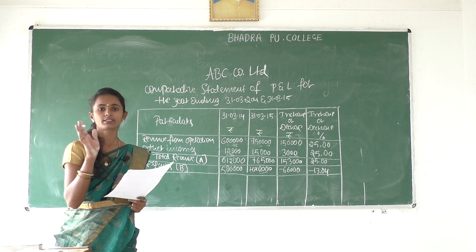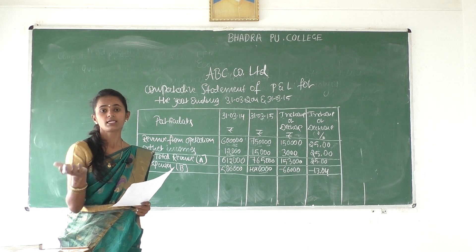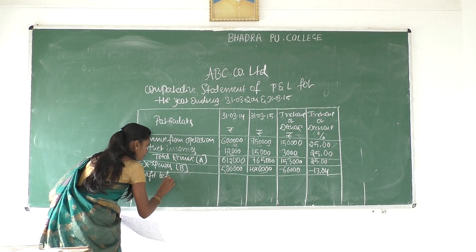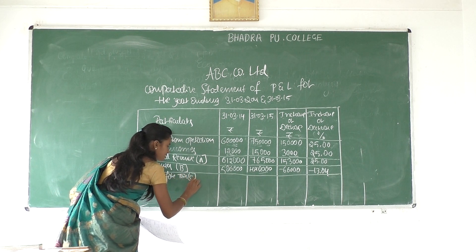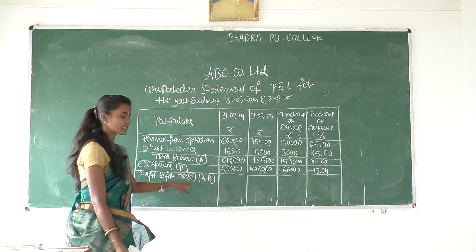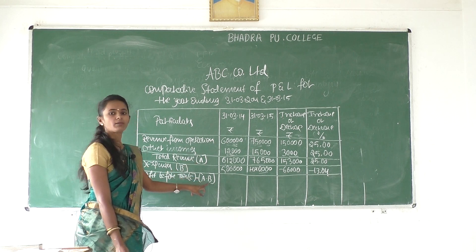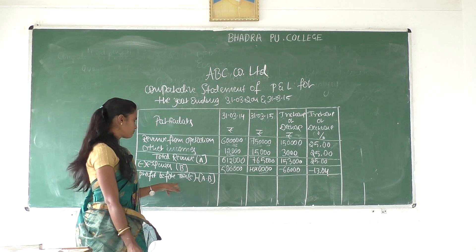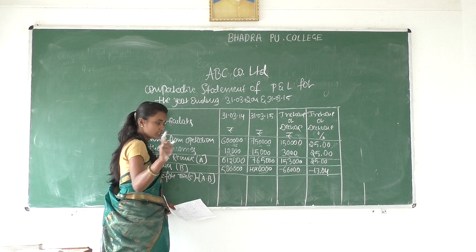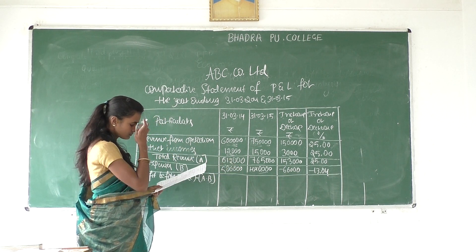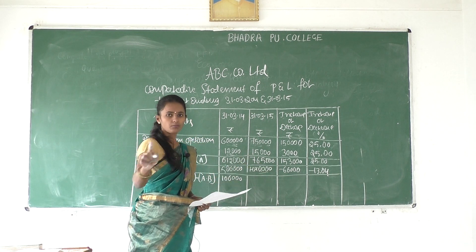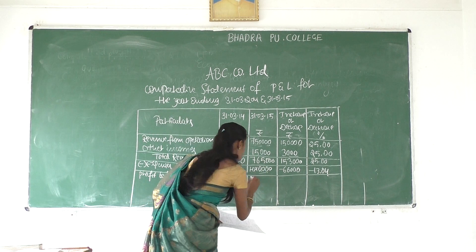We have an item of profit before tax — that is C, for 3 marks. To get C, what we have to do is less the A amount with the B amount. So profit before tax, C is A minus B — A is total revenue, B is total expenses. So 6,12,000 minus 5,60,000 — how much? It is 1,6,000. Next: 7,65,000 minus 4,40,000 — how much? It is 3,25,000.